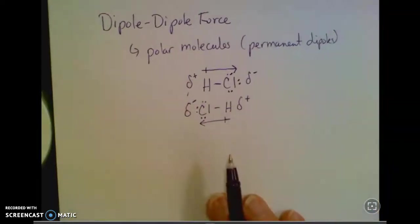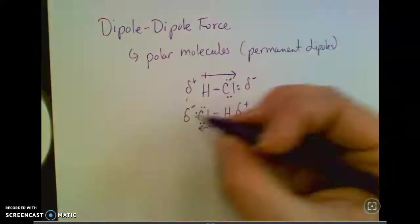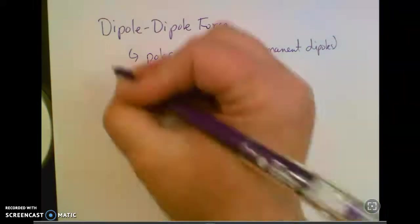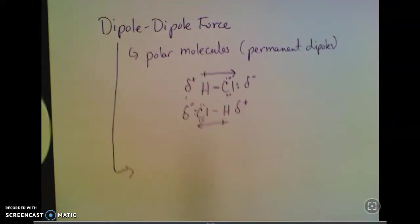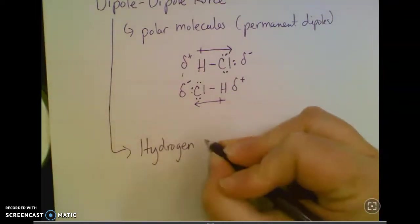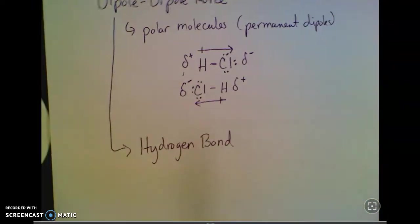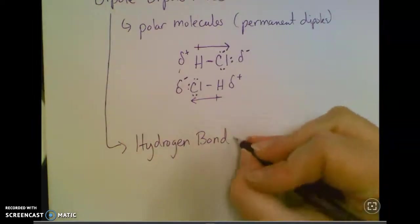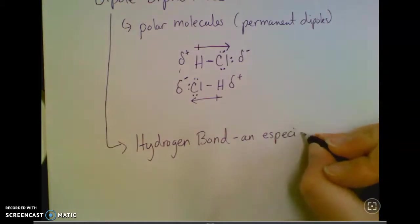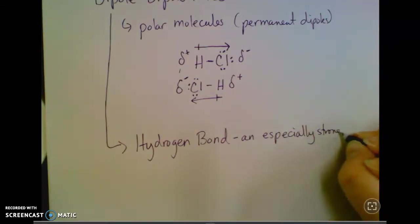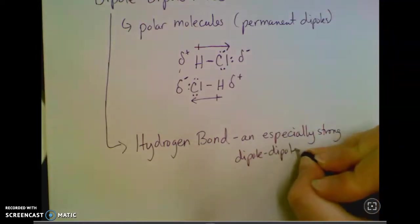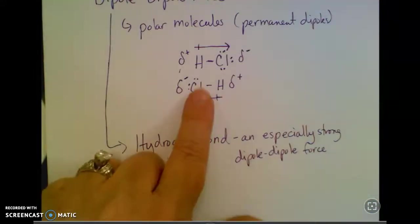So permanent dipoles. That one's not too bad to understand. Another name you're going to see, which is really in the same category, is a hydrogen bond. This is a bad name because it is not a chemical bond. It is an especially strong dipole-dipole force.